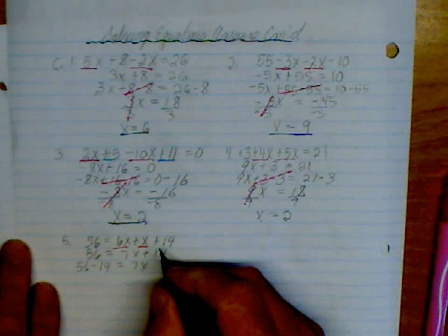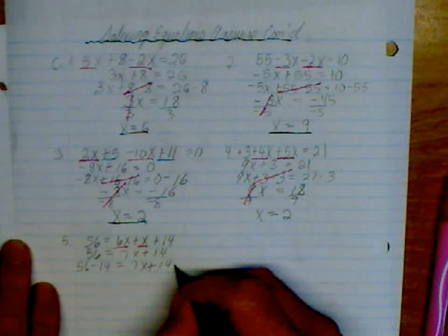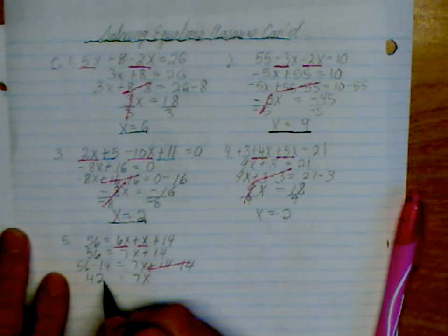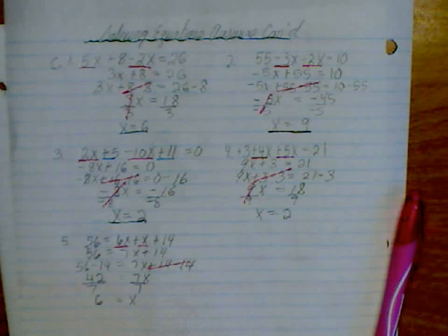It would be more work to move the 7x over just to put it on that side when we don't need to. So this time we got rid of it over here. We're left with 7x equals 42. And now we just need to divide both sides by 7. So 6 is equal to x.